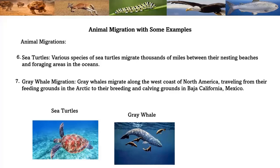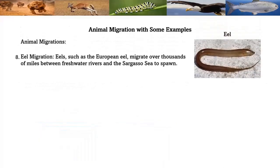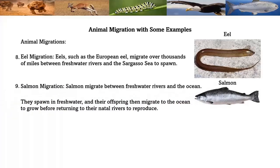Gray whale migration: gray whales migrate along the west coast of North America, traveling from their feeding grounds in the Arctic to their breeding and calving grounds in Baja California, Mexico. Eel migration: eels such as the European eel migrate over thousands of miles between freshwater rivers and the Sargasso Sea to spawn.